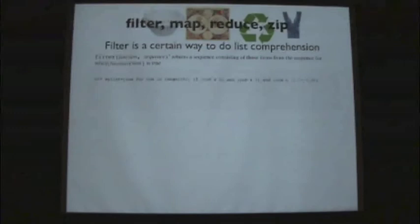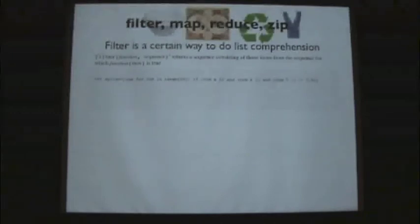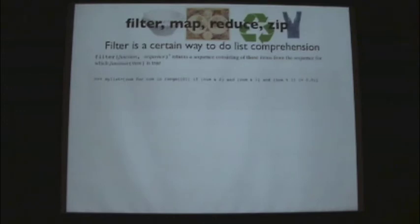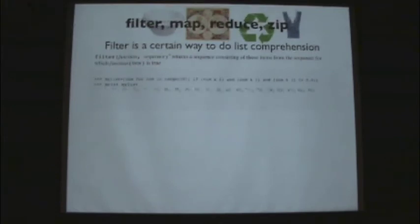I'm going to breeze through a couple of other built-in functions within Python: filter, map, reduce, and zip. In some sense many of these you kind of already know how to do within list comprehension. Filter returns a sequence consisting of those items from the sequence for which function(item) is true. Here we have a list comprehension thing reproduced from last time where I want to go through all numbers from 0 to 100, save those numbers if bitwise I have a 1 in the second-to-last bit and a 1 in the last bit, and make sure it's not exactly divisible by 11.